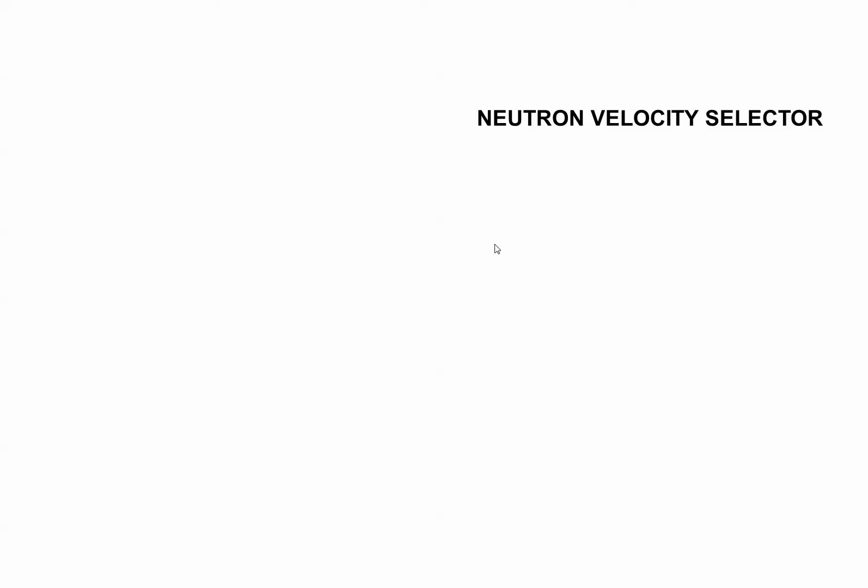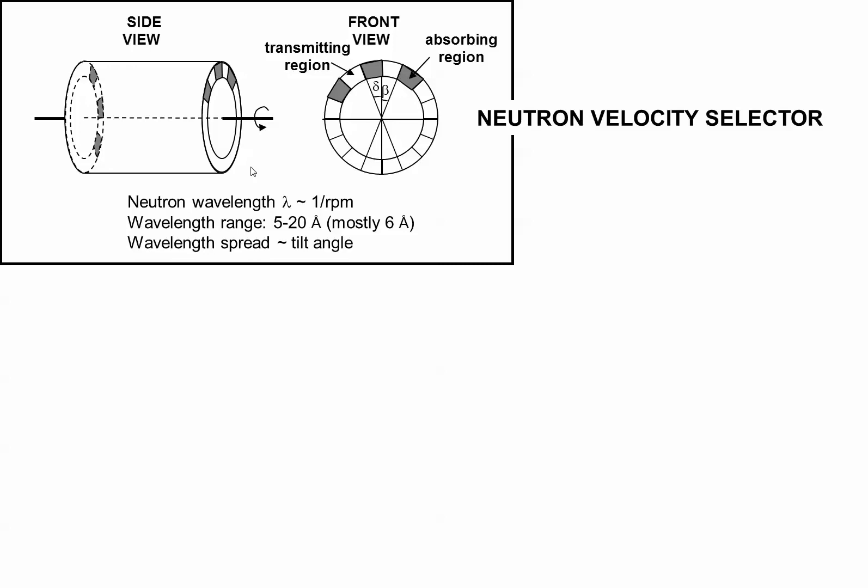I'll show you a neutron velocity selector. It's a cylindrical drum that spins at very high speed, like 5000 rpm, with a helical slot. Neutrons have finite speed.